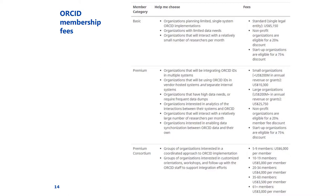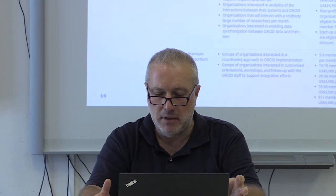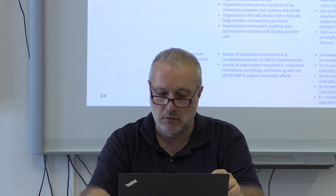ORCID memberships are not free but there are interesting fee structures. There is a basic membership fee of slightly above $5,000 for a single non-profit organization. What's important is the possibility to create consortia — if multiple universities gather together and become ORCID members, the fees are reduced. You can find all this information on the ORCID website.